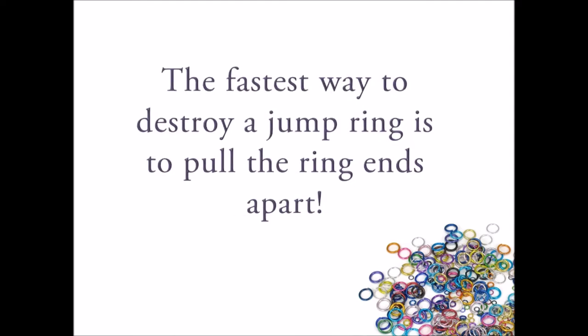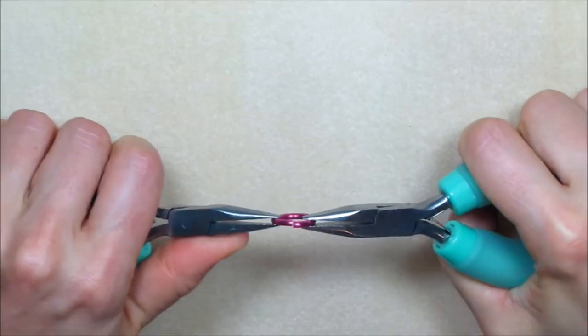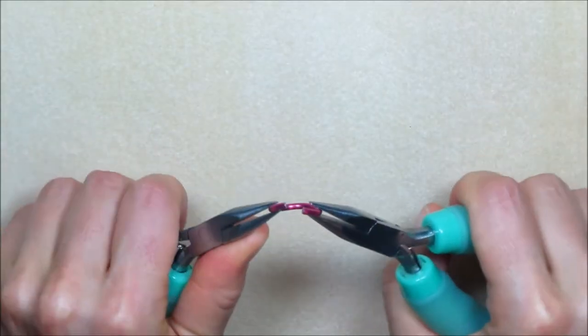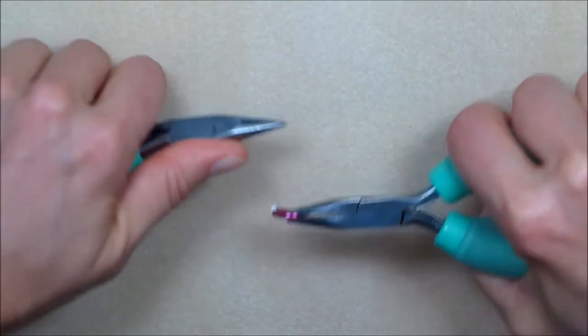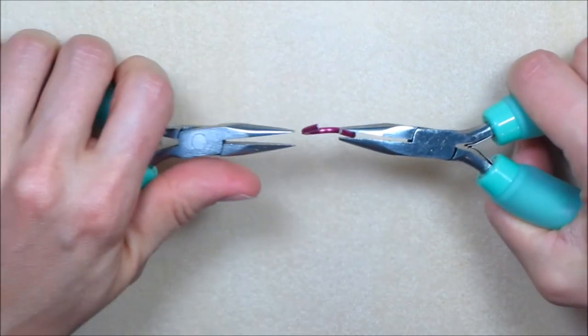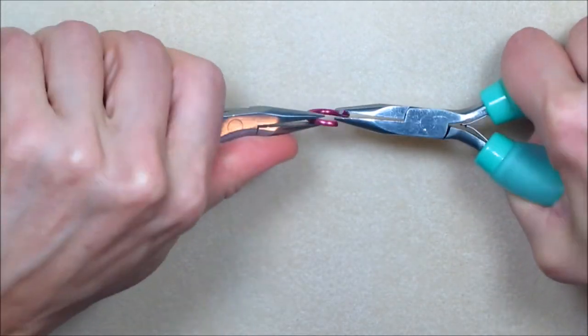To begin, it is important for you to know that the fastest way to destroy a jump ring is to pull the ring ends apart. It damages the integrity of its shape, and as you can see here, once I've separated the ring ends it's difficult for me to form it back into its original shape.